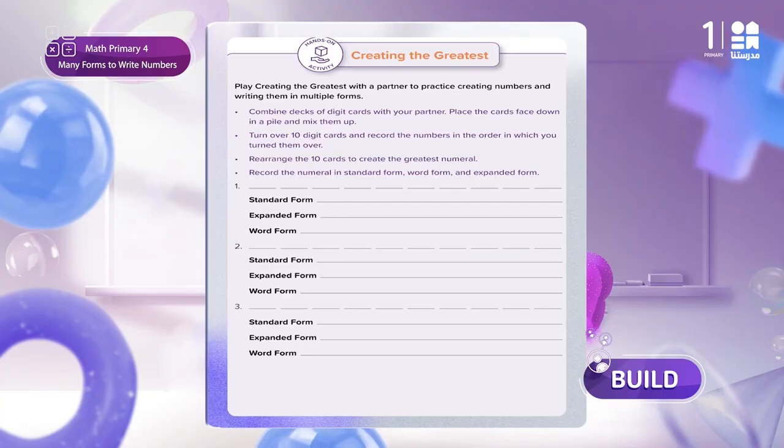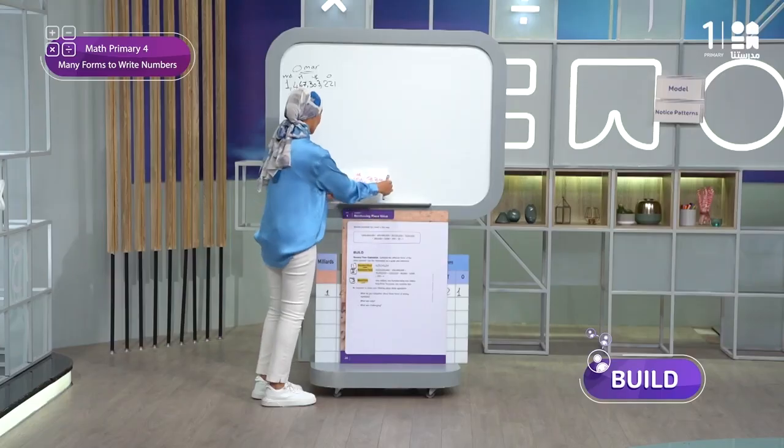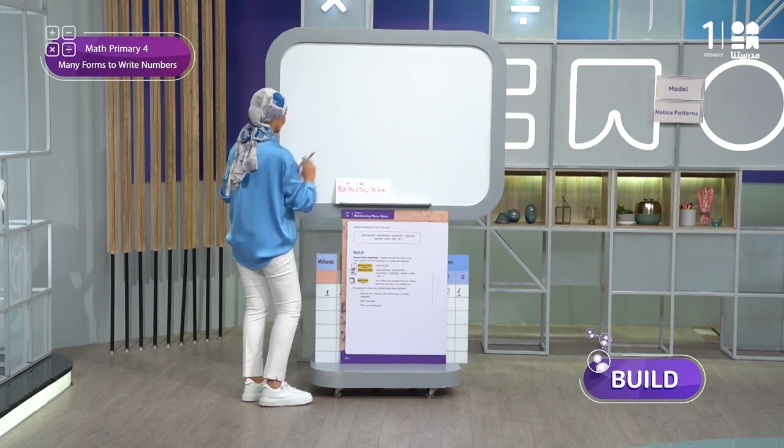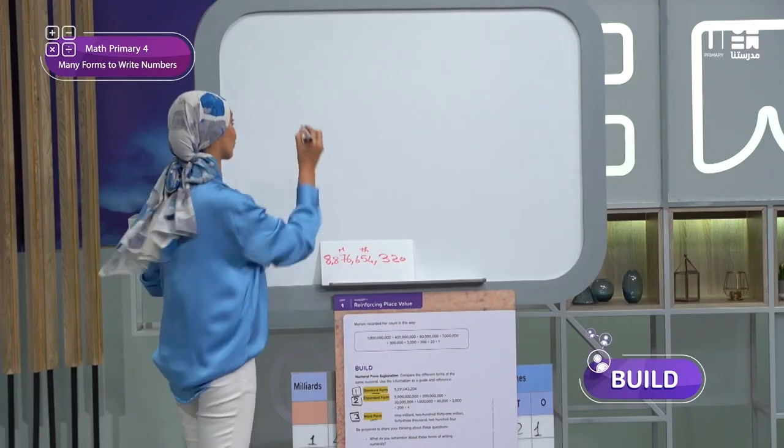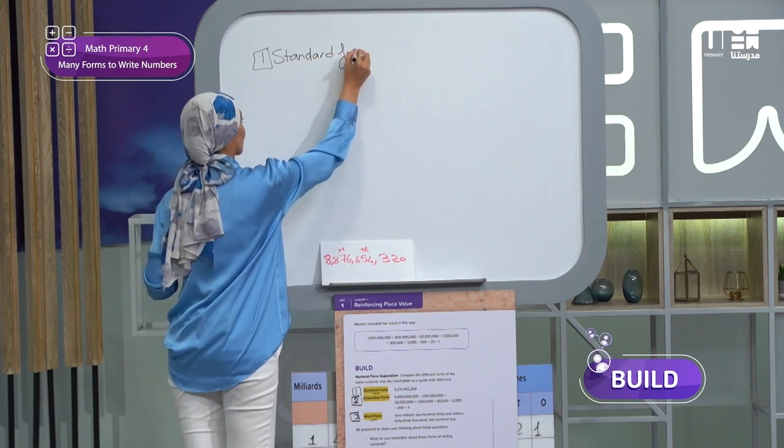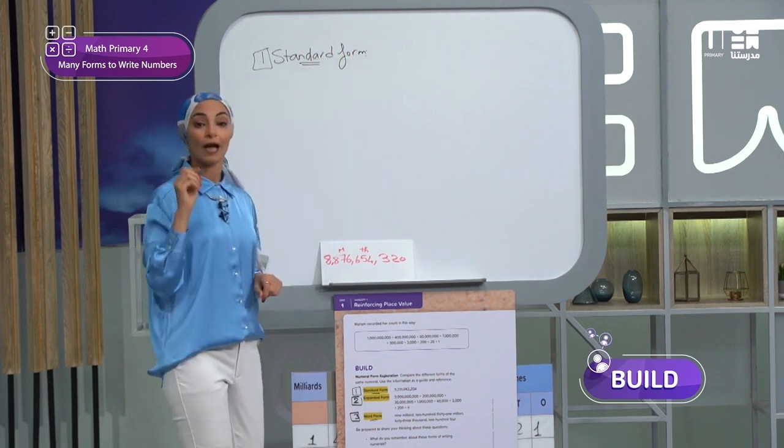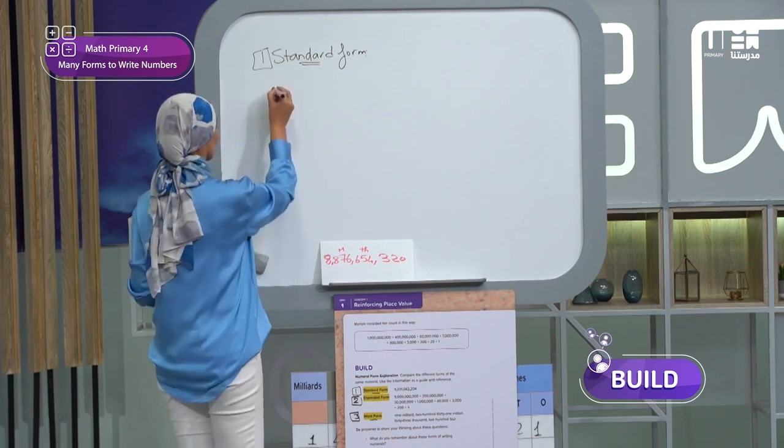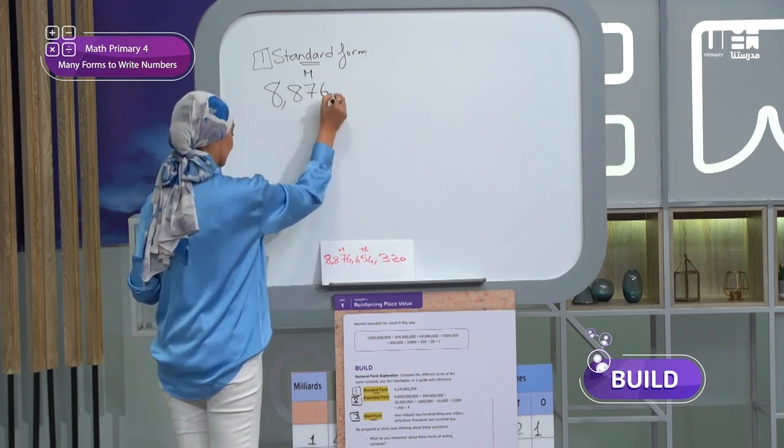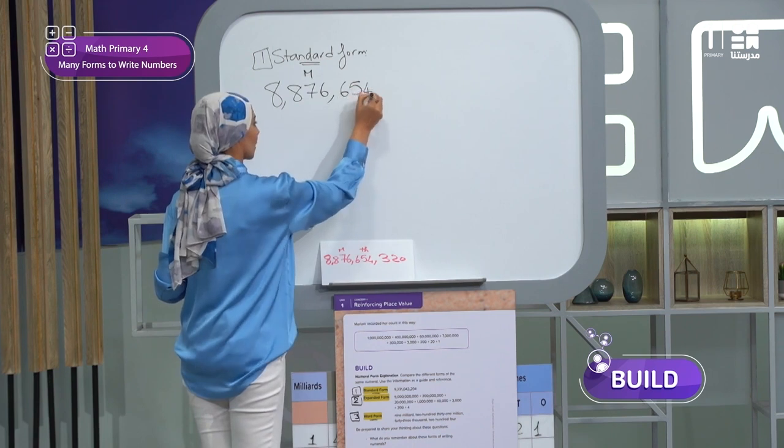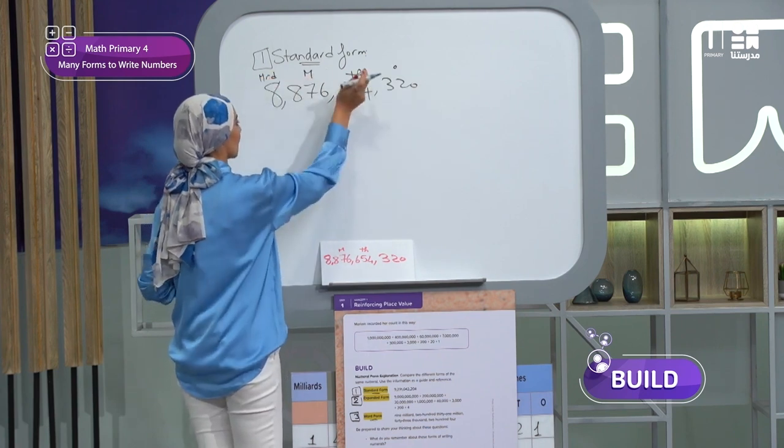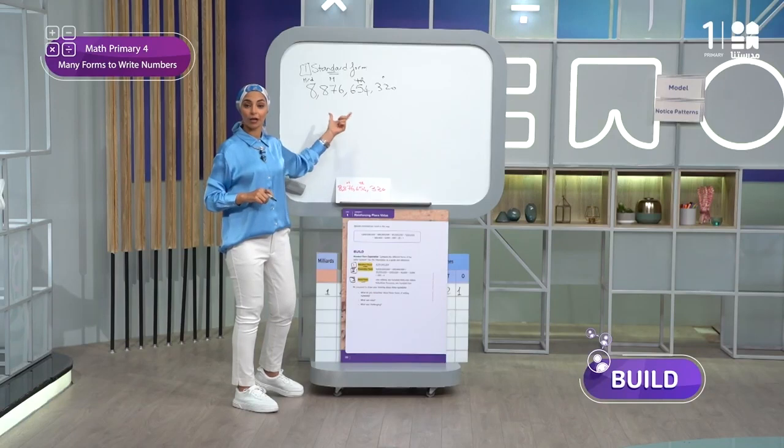Let's write this number in different forms. Now I want to write these numbers in three forms. First of all, I'll write it in standard form. I will write the numbers in digits. As you see here, it will be eight milliard, eight hundred seventy-six million, six hundred fifty-four thousand, and three hundred twenty. This is the milliard, million, thousand, and ones. This is the standard form. I write it in digits.